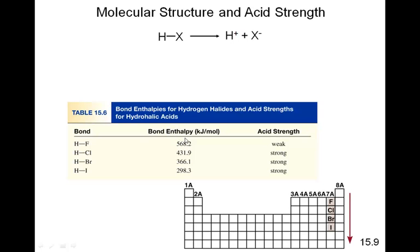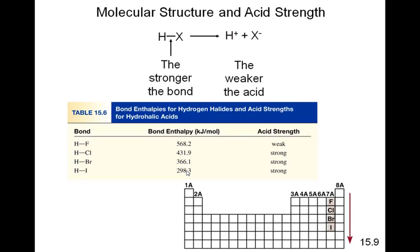The bond enthalpy is the energy required, in kilojoules, to break one mole of those bonds. We see that the H-to-F bond is actually the strongest bond, therefore making it the weakest acid. As we go down the chart, the bond enthalpy gets less and less, therefore the strength of the acid is increasing. The stronger the bond, the weaker the acid. The weaker the bond, the stronger the acid. HI has the weakest bond because its bond enthalpy is the least value, and therefore it's the strongest acid.